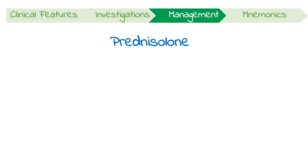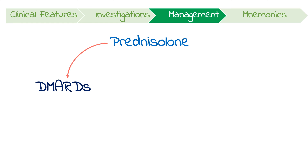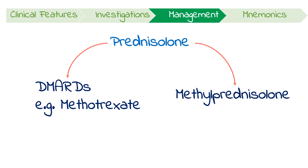The mainstay of treatment is oral glucocorticoids with prednisolone. However, more immunosuppression might be needed with the use of DMARDs like methotrexate. Furthermore, in the acute setting where there's respiratory involvement, additional support with methylprednisolone might be indicated too.